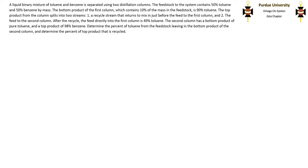The problem statement says a liquid binary mixture of toluene and benzene is separated using two distillation columns. The feedstock to the system contains 50% toluene and 50% benzene by mass. The bottom product of the first column, which contains 10% of the mass in the feedstock, is 90% toluene. The top product from the column splits into two streams: a recycle stream that returns to mix in just before the feed to the first column, and the feed to the second column.